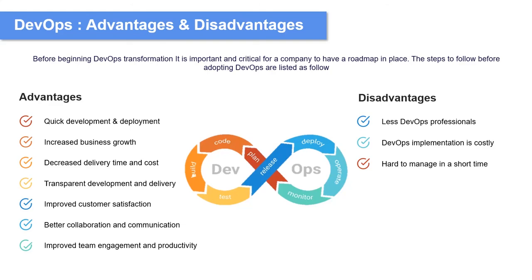DevOps implementation should take time before you can reap all the advantages. The last disadvantage is the complexity that DevOps can bring to automation projects. If your organization has a serious lack of DevOps knowledge, this can be a serious problem in the continuous integration of automation projects. Your organization will need the right experts who are skilled enough in DevOps and various technologies to run automation projects successfully and produce the right results.